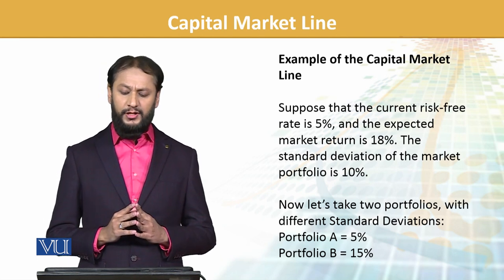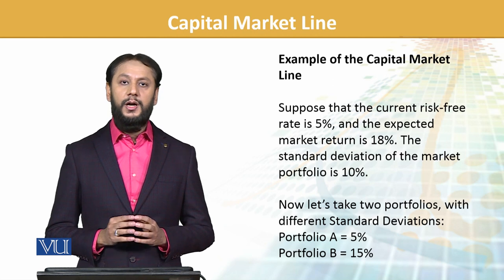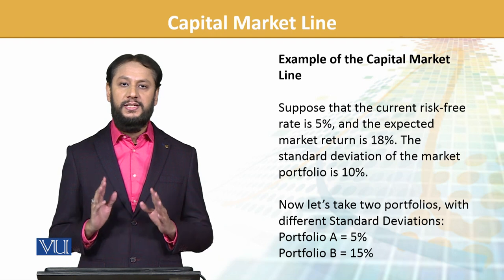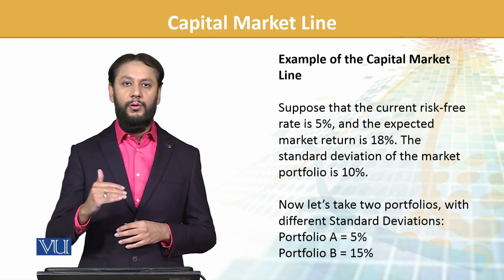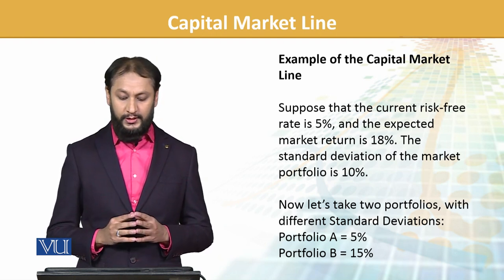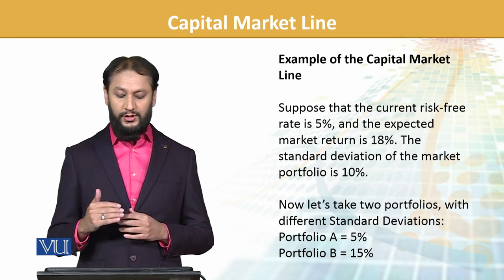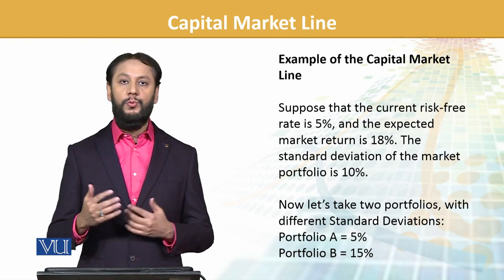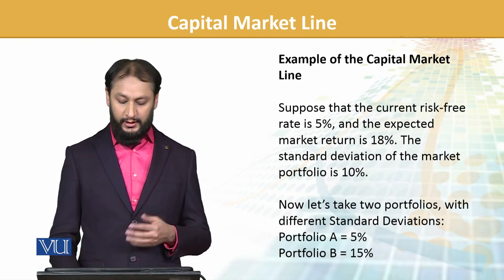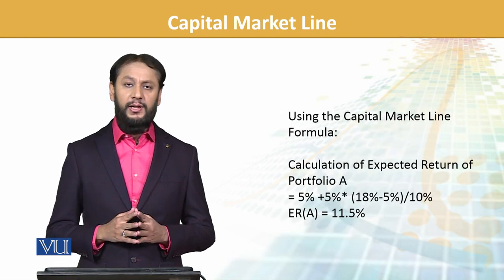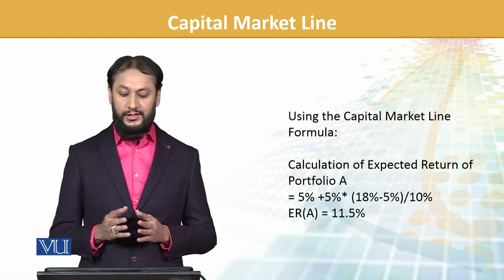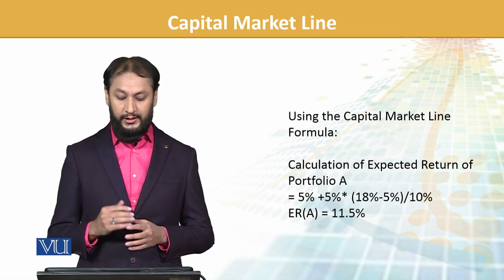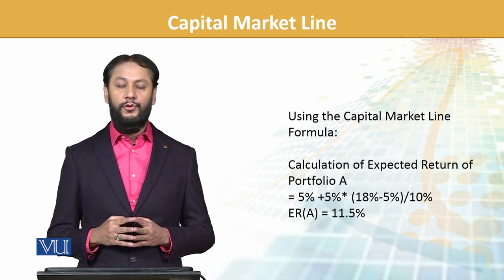Suppose the current risk-free rate is 5%, the expected market return is 18%, and the standard deviation of the market portfolio is 10. We have all the required inputs. Now let's make two portfolios: Portfolio A has a standard deviation of 5, and Portfolio B has a standard deviation of 15. We want to gauge these two portfolios using the CML formula we just discussed.